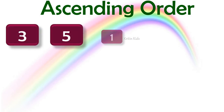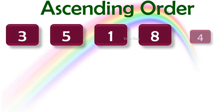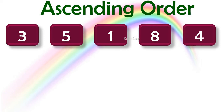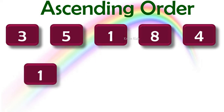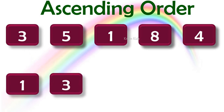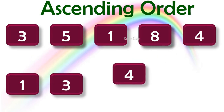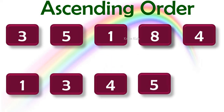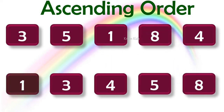Let's take one more example: 3, 5, 1, 8, 4. Are these numbers in ascending order? No. Let's arrange them in ascending order. Which is the smallest one? Number 1. Next comes number 3, next number 4, then number 5, then number 8. So: 1, 3, 4, 5, 8. These numbers have been arranged in ascending order.